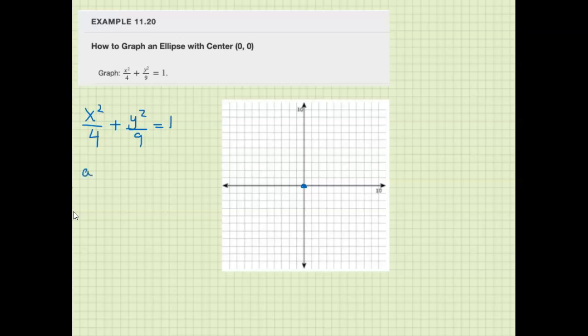So this is a squared equals 4, which means take the square root, you get a equals plus or minus 2. So it goes positive 2 and negative 2 - 2 to the right, 2 to the left.